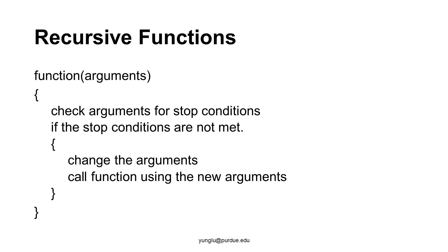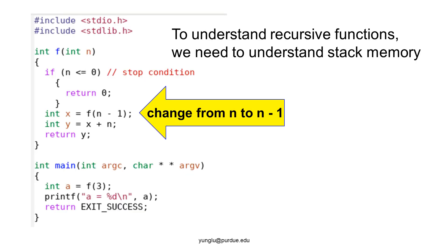This lecture will go through a recursive function thoroughly. This recursive function has only one argument and it is an integer. At the top of this function, it checks whether the input argument's value is zero or negative. If this condition is met, the function returns zero. If the argument is not zero or negative, the function calls itself with n minus one. This is the change.